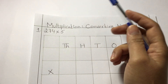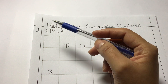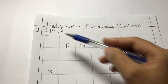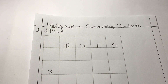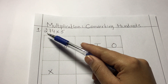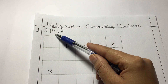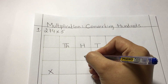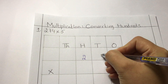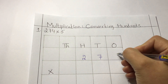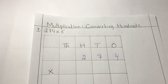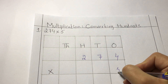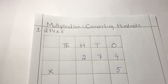So what's the first thing we have to do? We have to place these numbers in their proper columns. As we have the number 274, we will start placing the number from the hundreds place — two hundred and seventy four. And as five is a single digit number, we will place it in the ones column.